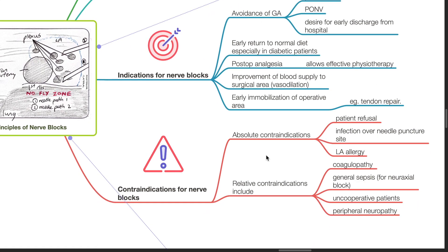Contraindications for nerve blocks include absolute and relative contraindications. Absolute contraindications are patient refusal, infection over needle puncture site, and local anesthetic allergy. Relative contraindications include coagulopathy, general sepsis for neuraxial block, uncooperative patients, and peripheral neuropathy.